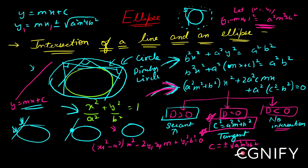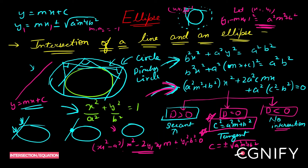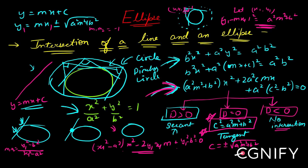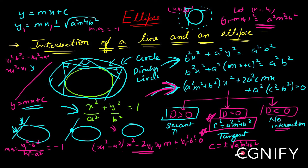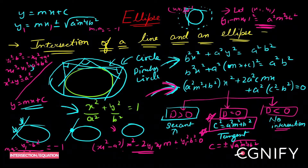This quadratic in m will have two real roots, meaning two tangents are drawn from (x₁, y₁). For these tangents to be perpendicular, the product of their slopes must equal -1, so the product of the roots must equal -1. By Vieta's formulas, the product of roots is (y₁² - b²)/(x₁² - a²) = -1. This gives y₁² - b² = -(x₁² - a²), which simplifies to x₁² + y₁² = a² + b².